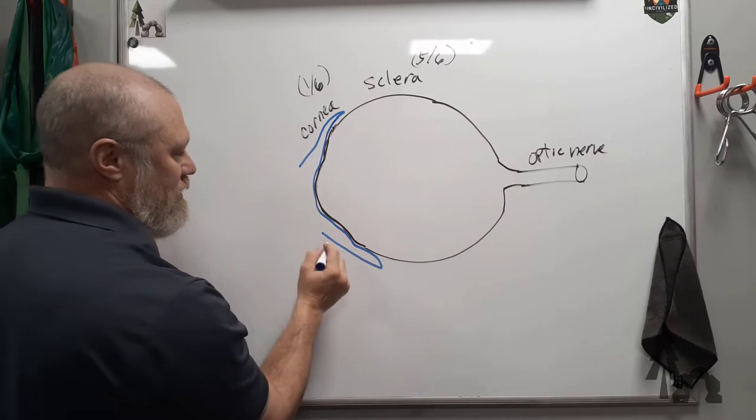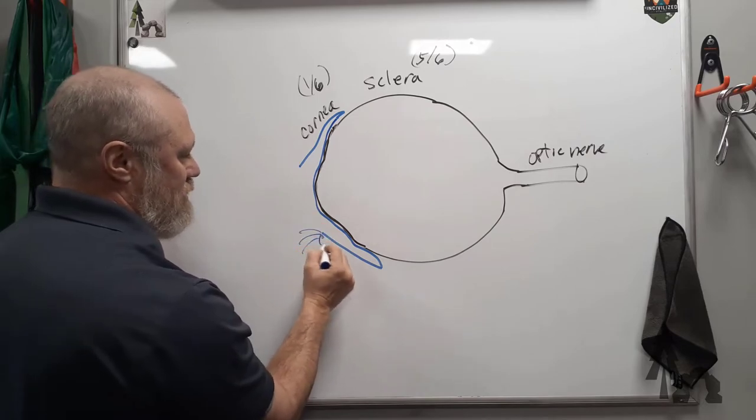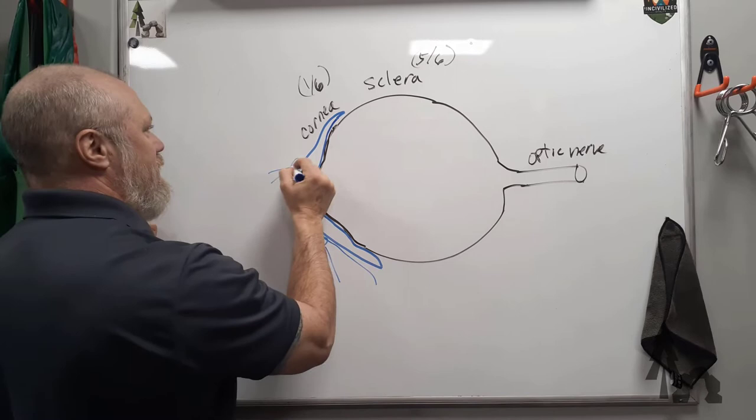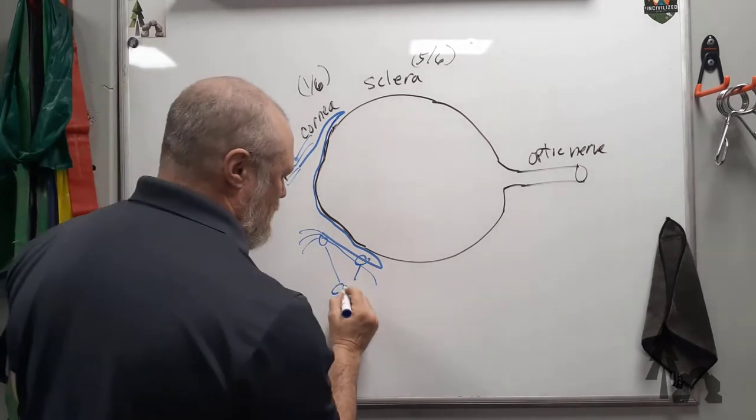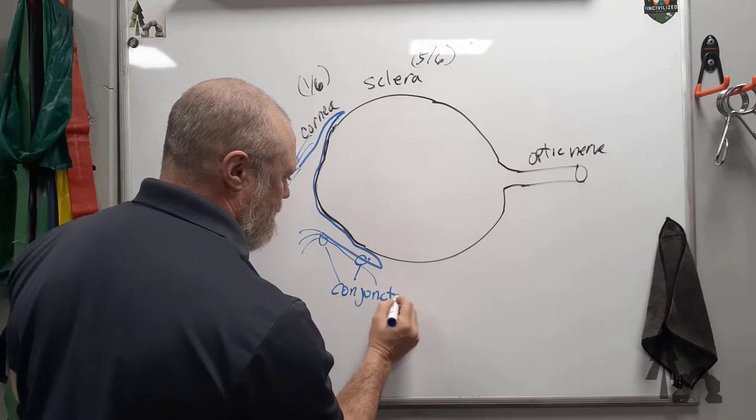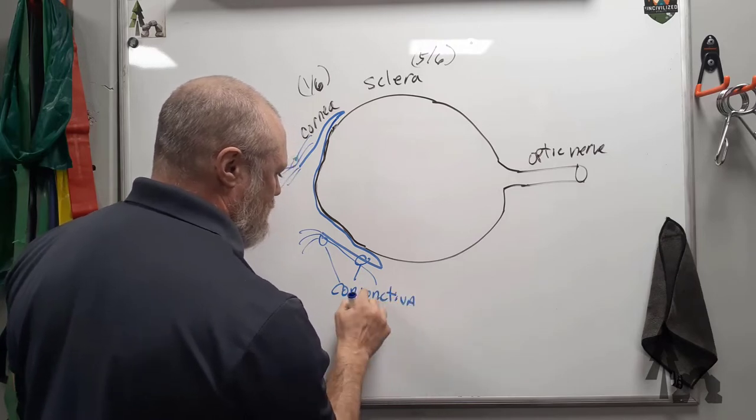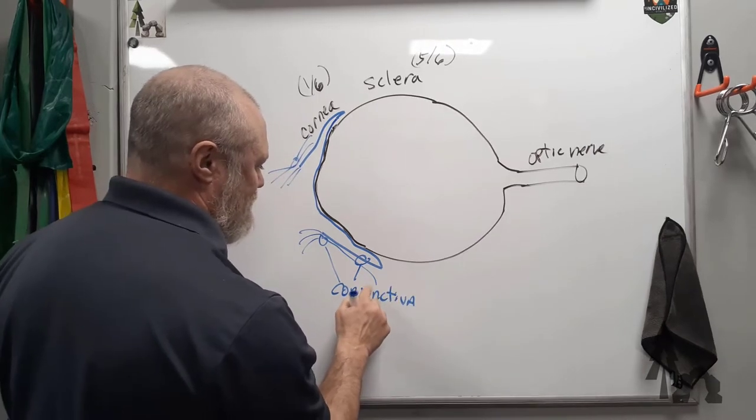To run out to where the eyelid is and the upper eyelid. That blue transparent layer is called the conjunctiva. That's where you get conjunctivitis and such and pink eye.